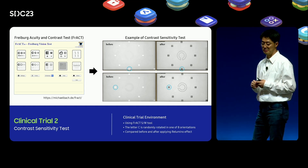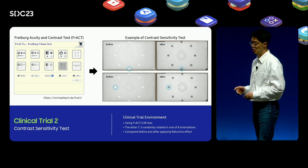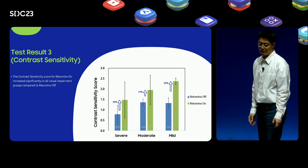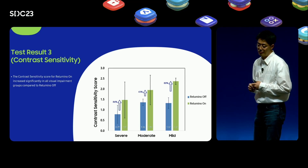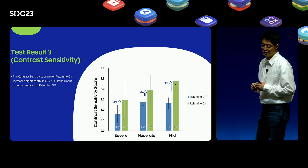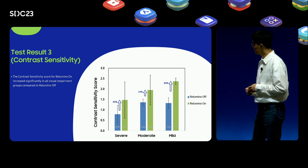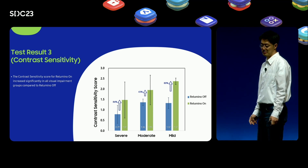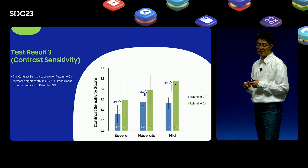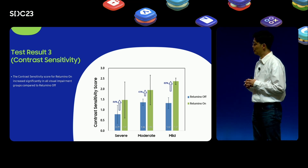We compared the contrast sensitivity score before and after applying the Rilumino effect. This graph compares the contrast sensitivity scores for each visually impaired group. You can see that contrast sensitivity scores significantly increased in all visually impaired groups. In the moderate visual impairment group, contrast sensitivity scores increased by 43%, and the severe and mild visual impairment groups increased by more than 80%. In particular, the more severe the visual impairment, the more effective the function becomes. These clinical trials confirm that the Rilumino algorithm has a significant effect on people with low vision.